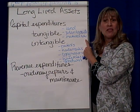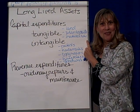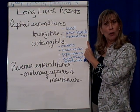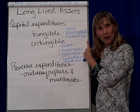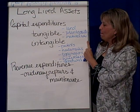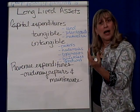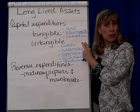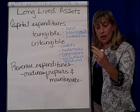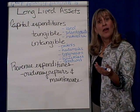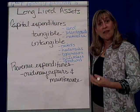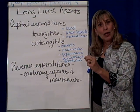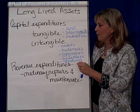Then we also have natural resources, and natural resources include things like oil, coal — things that even here in Kentucky, when you take clay out of the earth and make bricks, that clay from the earth is a natural resource, just like oil or natural gas is.